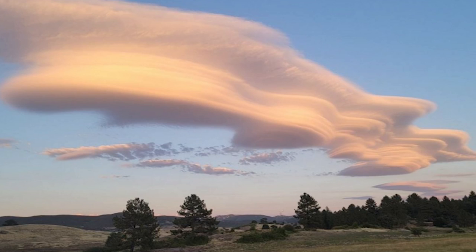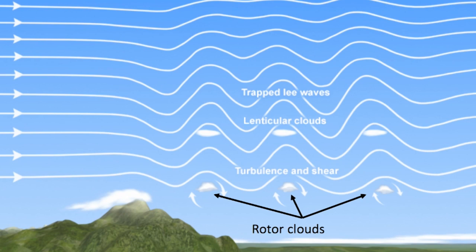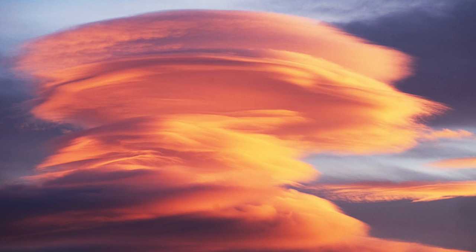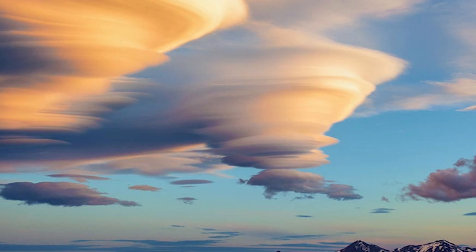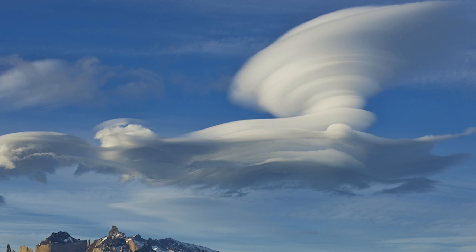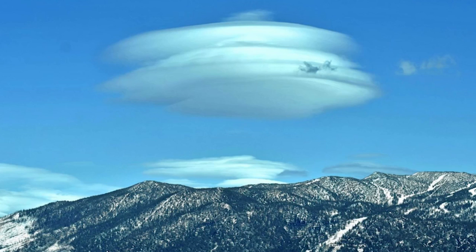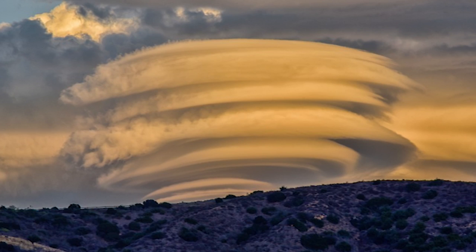Lenticular clouds are created when an obstruction, like a mountain, gets in the way of the flow of moist air. The mountains disrupt the airflow, creating turbulence and causing air to rise and fall in a wave-like pattern on the leeward side of a mountain. As this air rises and meets a layer of cooler air, the air condenses and forms a cloud. As long as this air is forced over that mountain, the cloud continues to form at the crest of the air wave, so to speak. This lift can happen directly over the mountain or several miles downstream from the mountain.